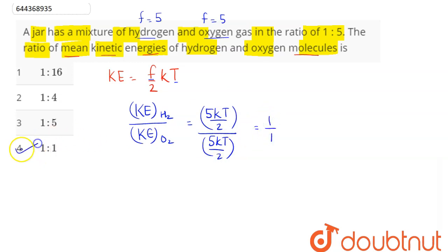which is option number 4. Hence, the average kinetic energy for one molecule is independent of number of molecules. It only depends on degree of freedom and temperature, which is the same. Hence, option 4 is the correct answer.